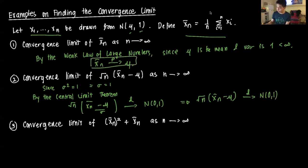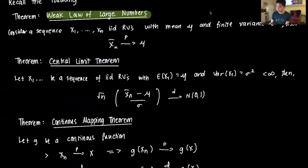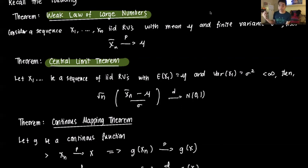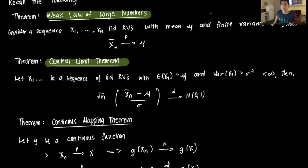Let's box that answer. The central limit theorem states that if we have a sequence of IID random variables with mean μ and finite variance σ², then √n times (x̄ₙ − μ) over σ converges in distribution to a standard normal. The √n is the normalizing factor, so the expression does not degenerate to the mean.